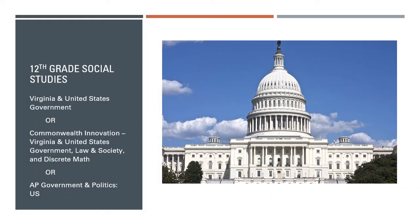Students in 12th grade social studies can take Virginia and United States Government, where they develop an understanding of our foundational principles of democracy, the documents that helped establish those principles, the U.S. Constitution, and our American political system, as well as their place in it as an American citizen. Commonwealth Innovation covers that same content while also exposing students to Law and Society — learning about our criminal and civil justice systems — and Discrete Math, using a project-based approach to develop a deep understanding of American politics. Students can also select AP American Government and Politics — check out our AP video for more information. None of these courses have an SOL test attached to them.